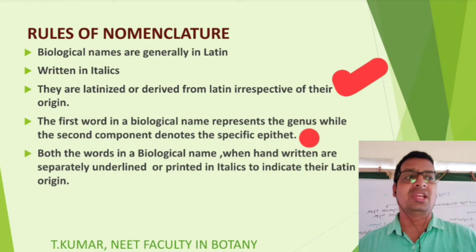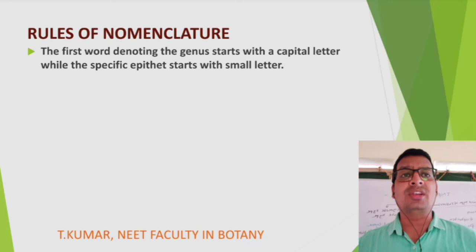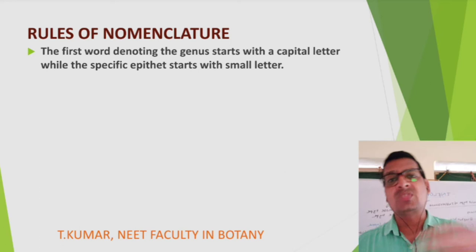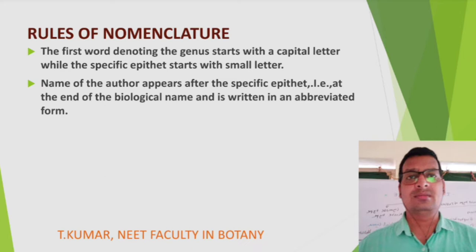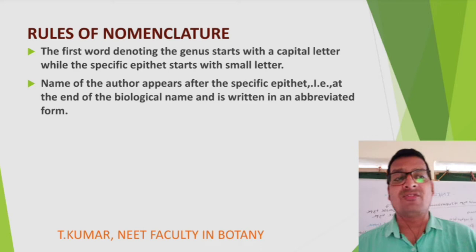The first word denoting the genus starts with a capital letter, while the specific epithet starts with a small letter. The name of the author appears after the specific epithet, at the end of the biological name, and is written in an abbreviated form.